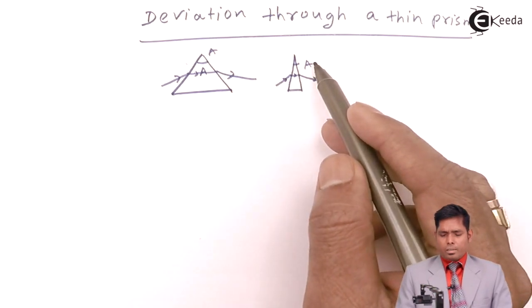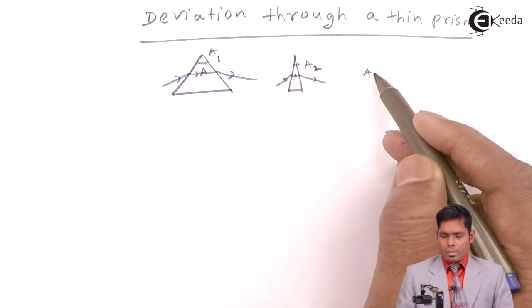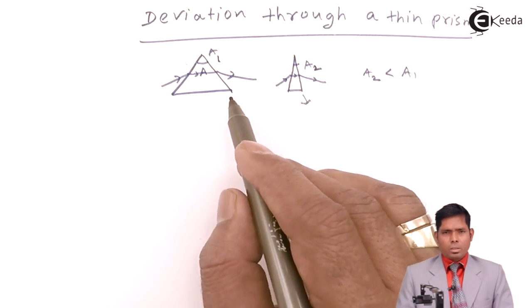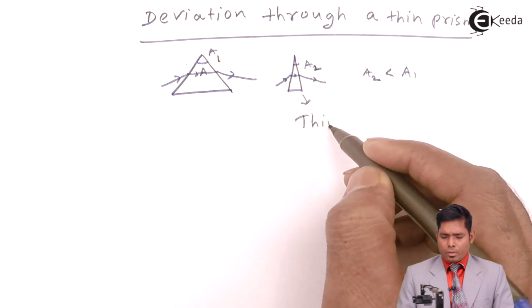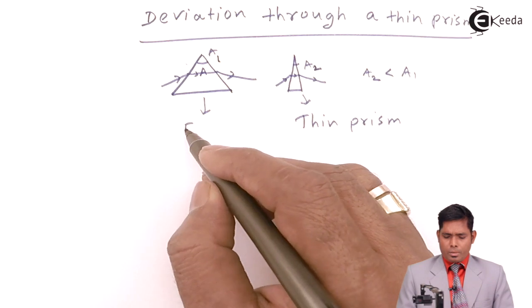Now, you can see that in these two cases this angle is smaller than this angle. Suppose this is A1 and A2, so you can write that A2 is less than A1. So this is comparable to this prism. This is a thin prism and this is a fat prism.